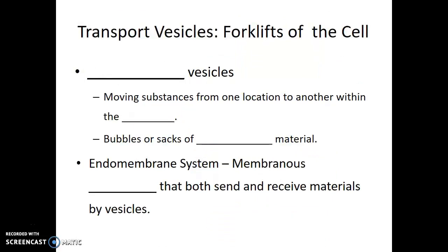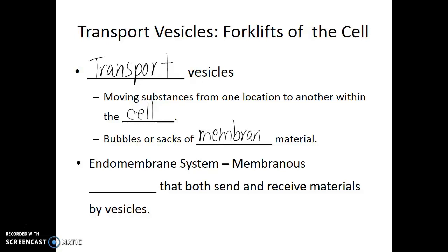The next organelle that's part of the endomembrane system is the transport vesicle. You can think of transport vesicles as the forklifts of the cell — their job is to move substances from one location to another within the cell. When we look at them, they look like bubbles or sacks of membrane material. These little bubbles are able to take materials from one organelle of the endomembrane system and transport them to another.